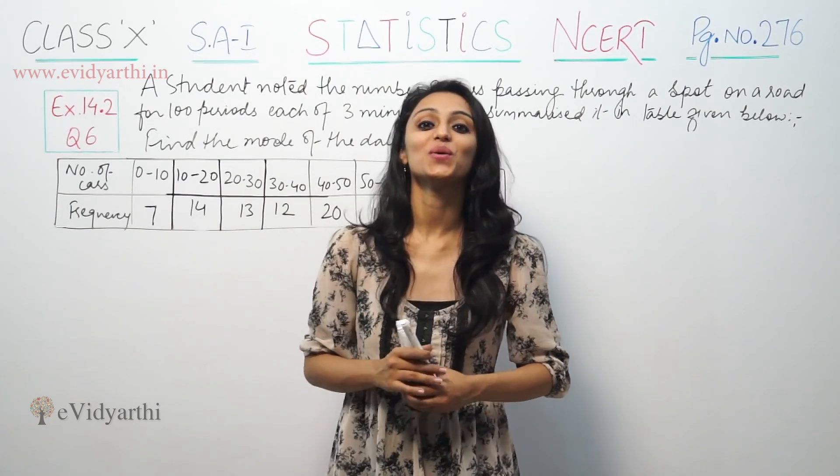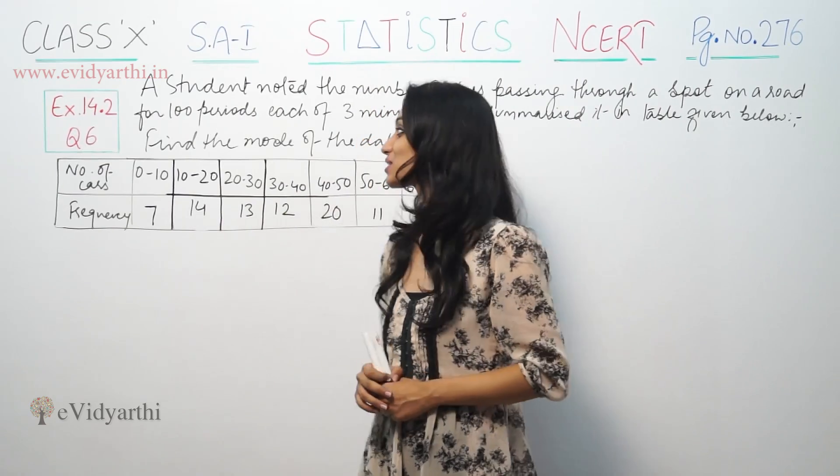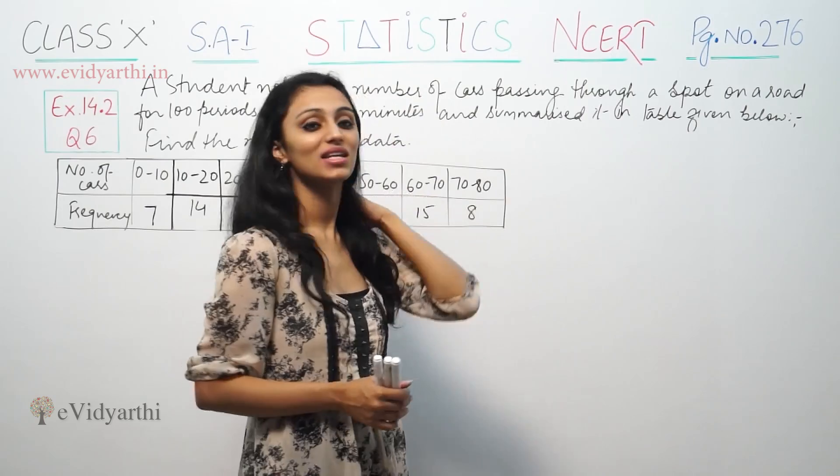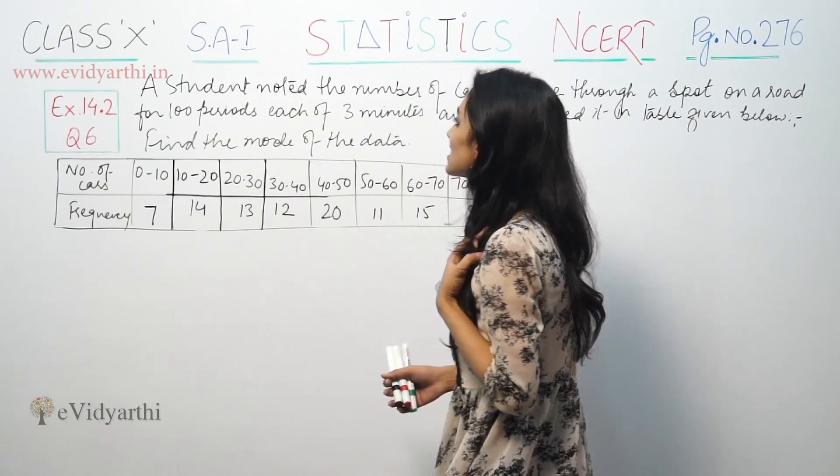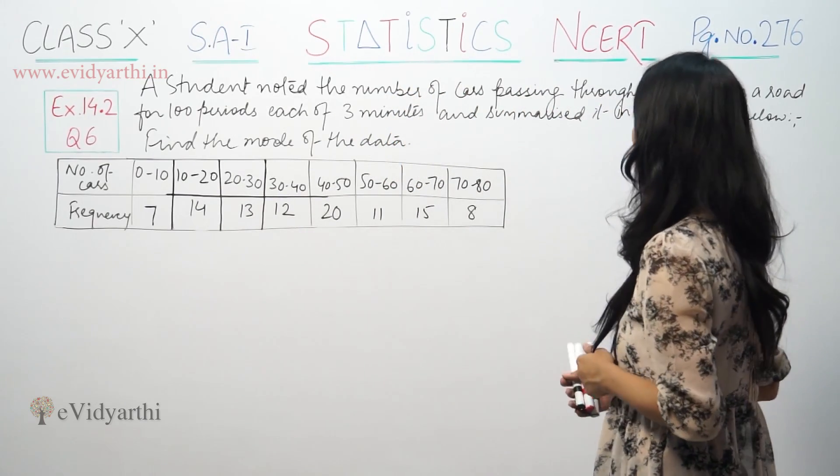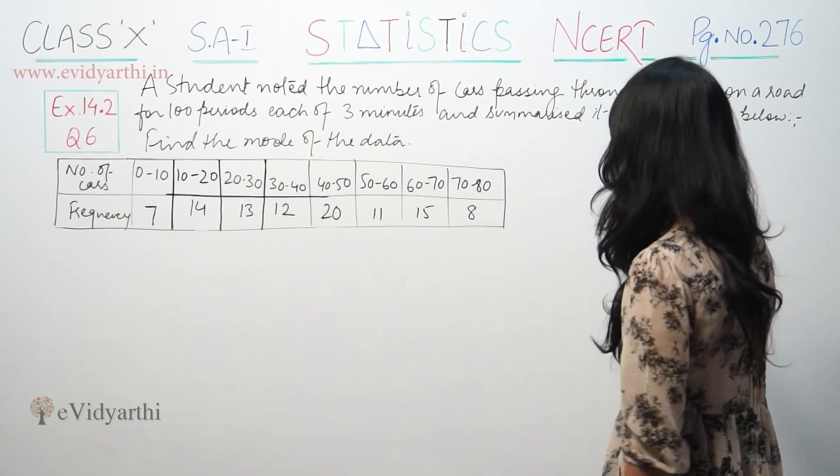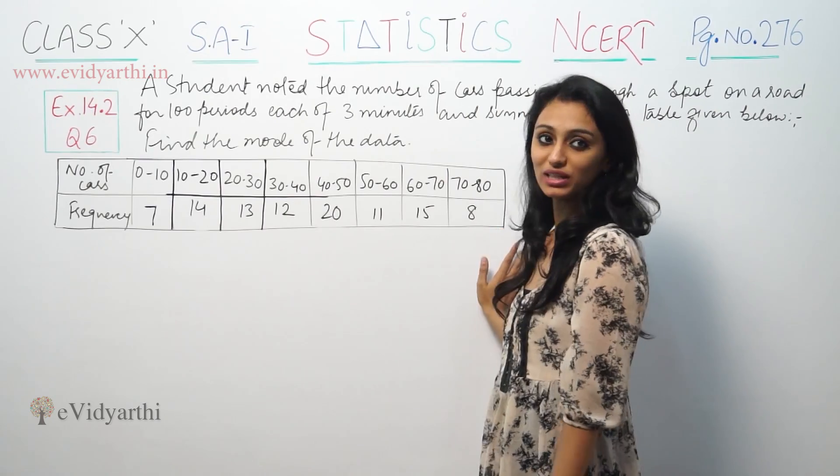Hi, Namaste, this is Khush Phu with another question of statistics. This is question number 6, exercise 3.2, page number 276 from NCERT. This says a student noted the number of cars passing through a spot on a road for 100 periods, each of 3 minutes, and summarized it in the table given below. Find the mode of the data.